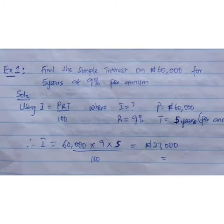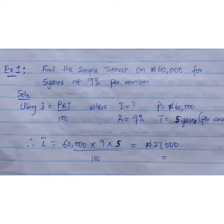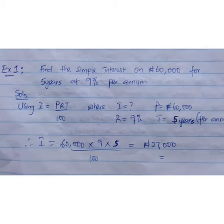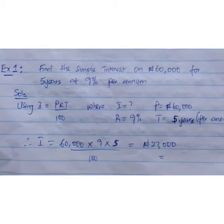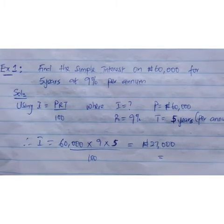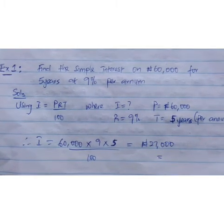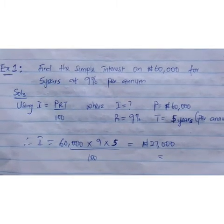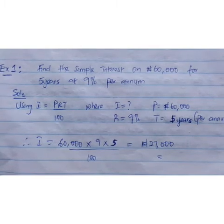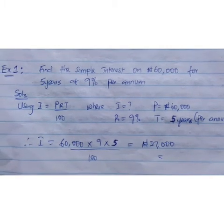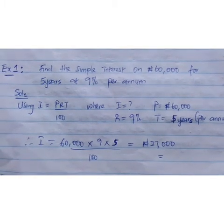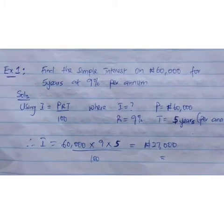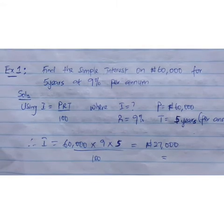Where I is unknown — what we are looking for — our P is 60,000 naira, rate is 9%, and time is 5 years. We have I equals 60,000 times 9 times 5 over 100, leaving our answer to be 27,000 naira.